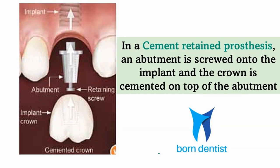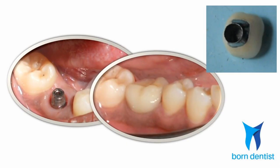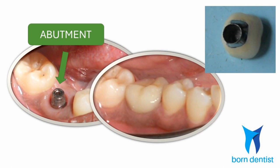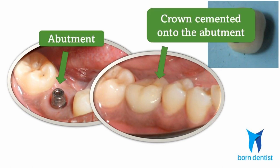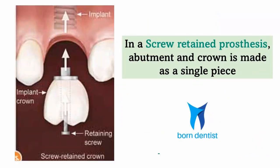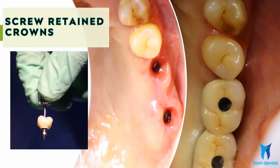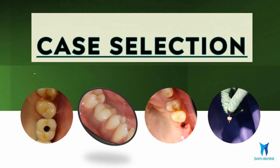First let us look at what these terms mean. A cement retained prosthesis is one in which an abutment is screwed onto the implant and a crown is cemented onto the abutment with a luting cement. So in such a prosthesis there are three component parts: a fixture, an abutment, and a cementable crown. In a screw retained prosthesis, the abutment and crown are fabricated by the lab as a single piece structure, and screwed directly onto the implant.